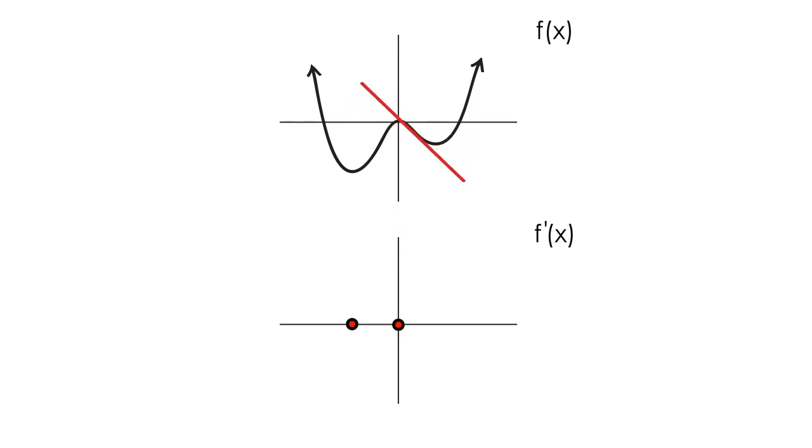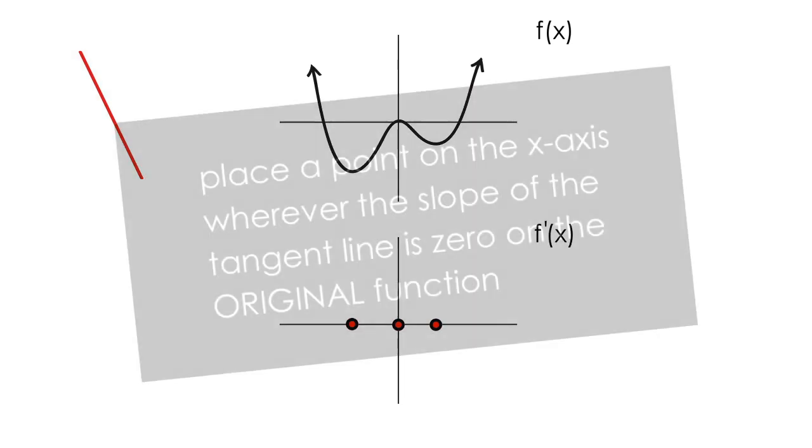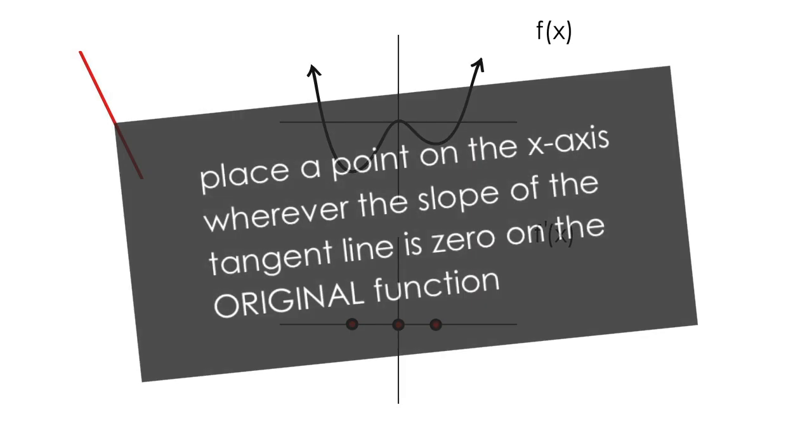Moving the tangent line along the curve of this function, we can see one more place where this happens, the last point where the slope of the tangent line is equal to zero. To summarize so far, to sketch the graph of the derivative of a function, place a point on the x-axis in line with any point where the slope of the tangent line is zero for the original function.